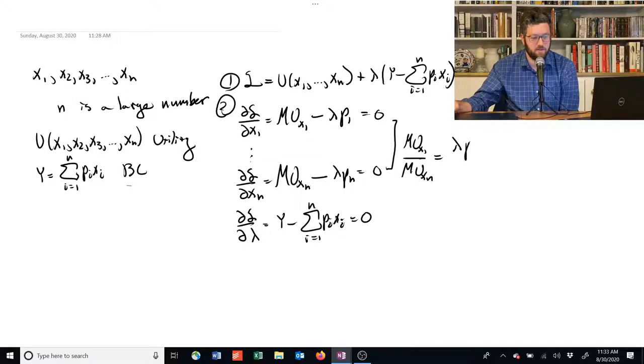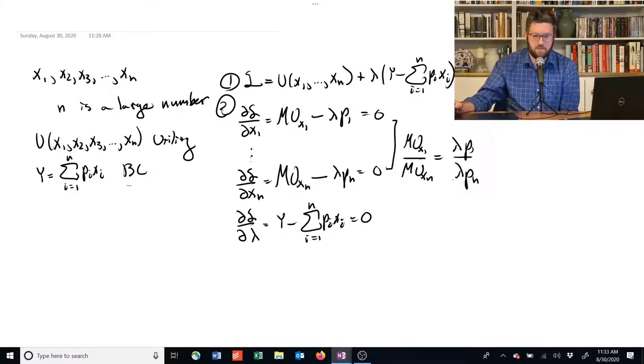And the lambdas fall away, and I get just lots of these marginal rate of substitution from X1 to XN is equal to the price ratio between those two goods.